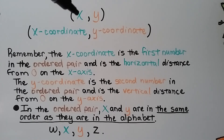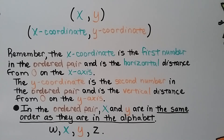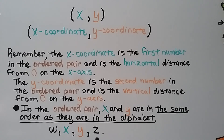In an ordered pair, we have an x value and a y value — the x coordinate and the y coordinate on the graph. The x coordinate is the first number in the ordered pair and is the horizontal distance from 0 on the x-axis. The y coordinate is the second number and is the vertical distance from 0 on the y-axis. In the ordered pair, x and y are in the same order as they are in the alphabet: x comes first, then y.